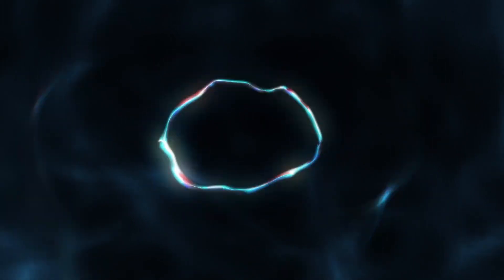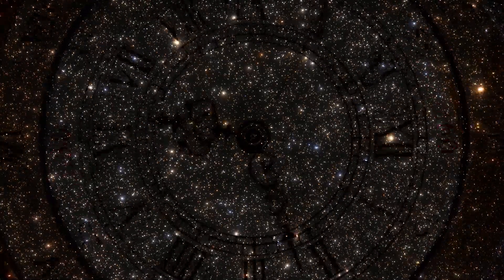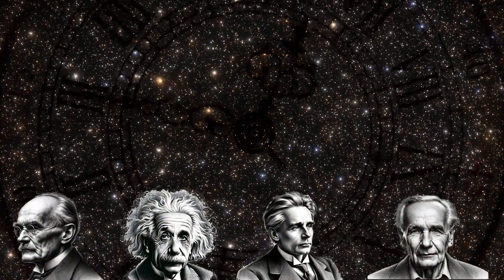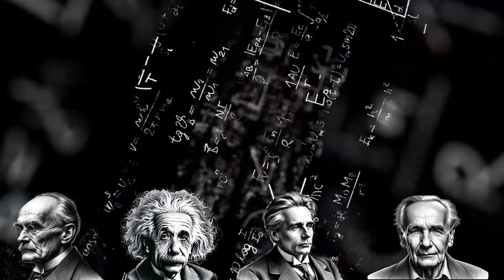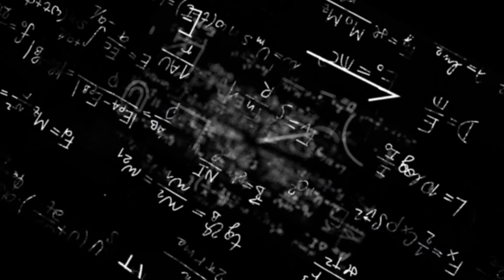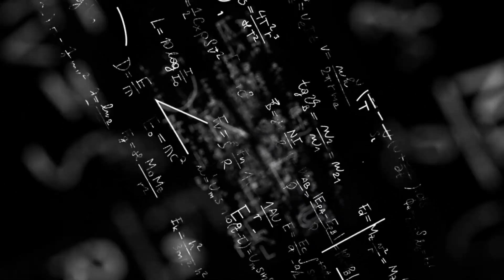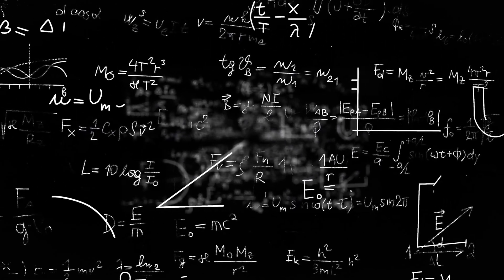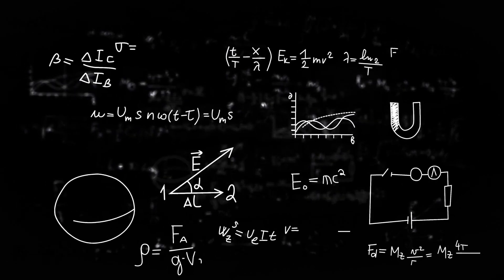Let's travel back to the early 20th century to the genesis of quantum mechanics. It was a time of scientific ferment, where the likes of Planck, Einstein, Bohr, and Heisenberg were rewriting the rules of the physical world. Their work unveiled a quantum landscape that was starkly different from the clockwork universe of classical physics. Here, in the quantum realm, uncertainty wasn't just a matter of incomplete knowledge, but an intrinsic quality of nature itself.